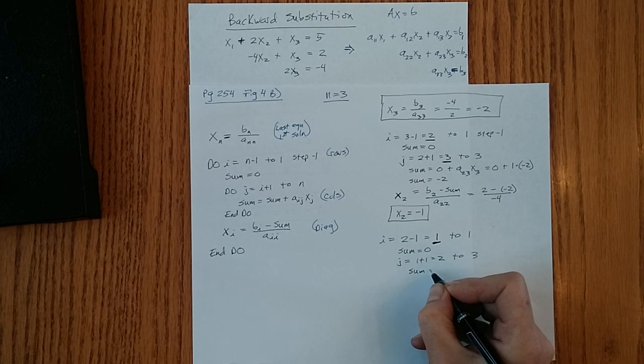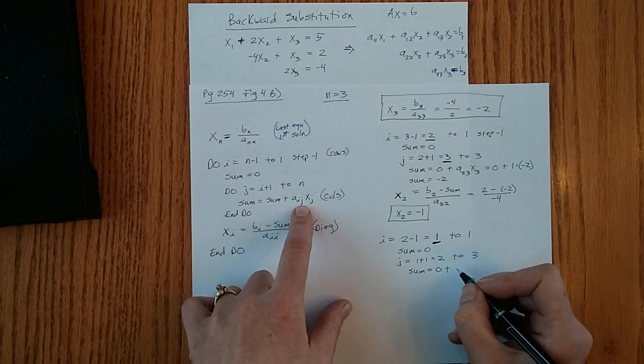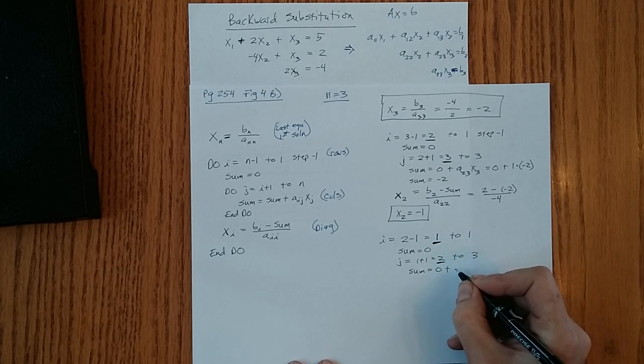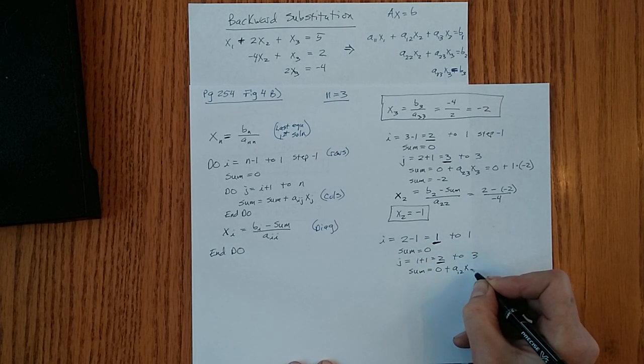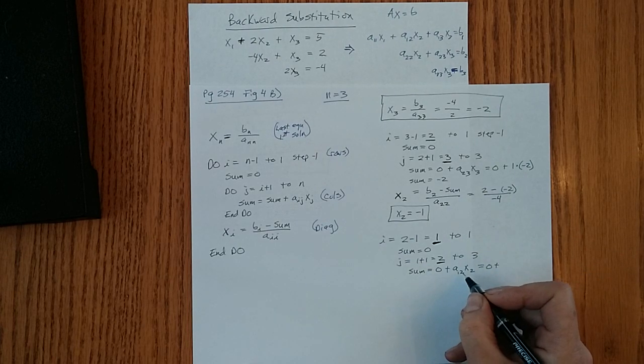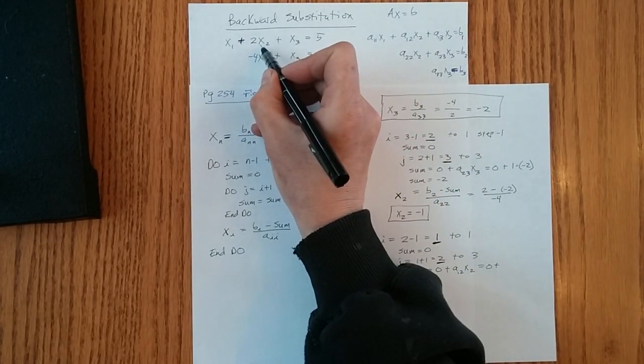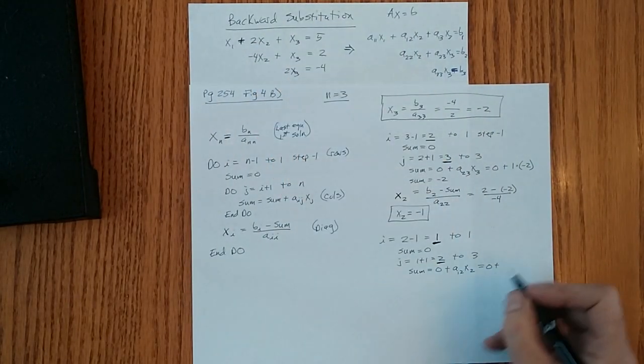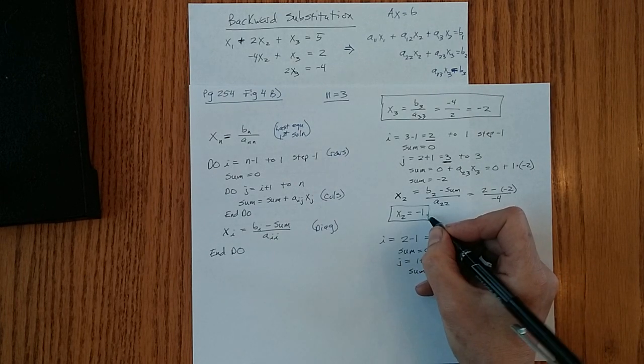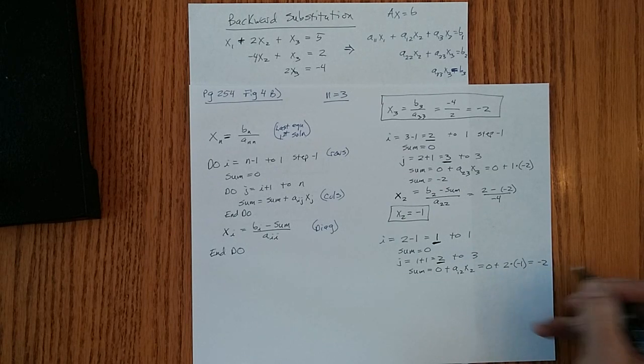Sum now gets set to 0. Sum plus aij is now a12, x sub 2. That's 0 plus a12. This term right here. a12 is 2 times x sub 2. We calculated up here as negative 1. So sum right now is set to minus 2.